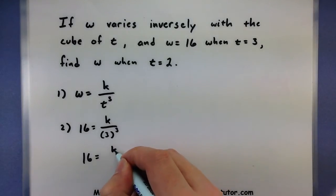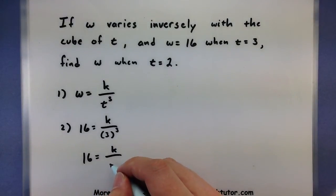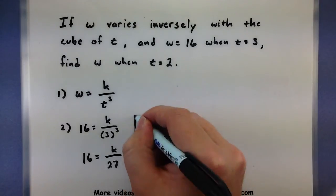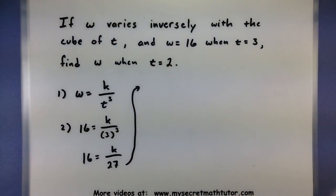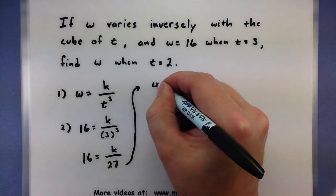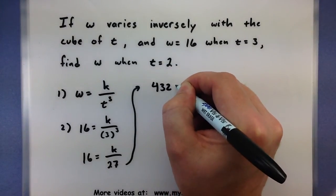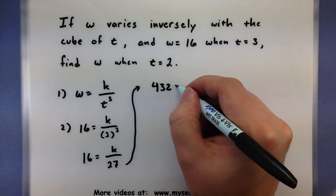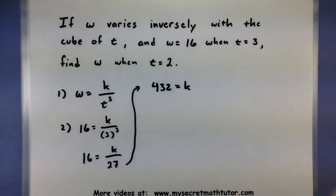So 3 cubed would be 3 times 3 times 3, that's 27. Then we multiply 16 and 27 together, so we get 432, and that is equal to our k.